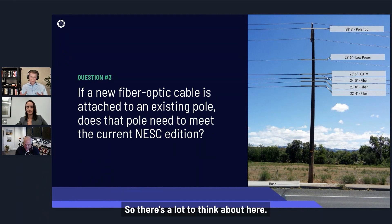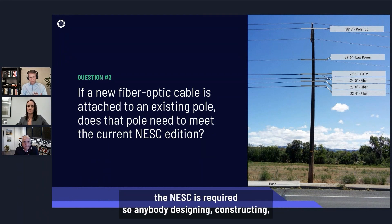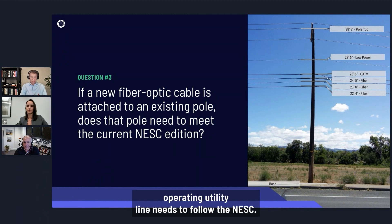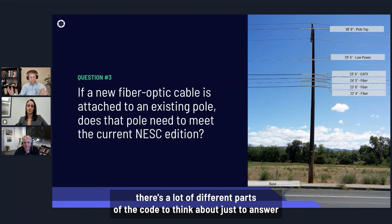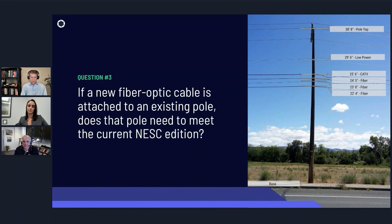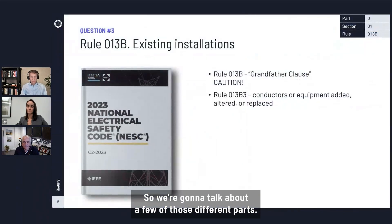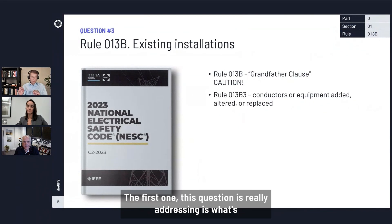There's a lot to think about here. This is a good example of how the NESC is required — anybody designing, constructing, or operating a utility line needs to follow the NESC. There are a lot of different parts of the code to think about just to answer a seemingly simple question. The first part this question is really addressing is what's sometimes called the grandfather clause — Rule 013.